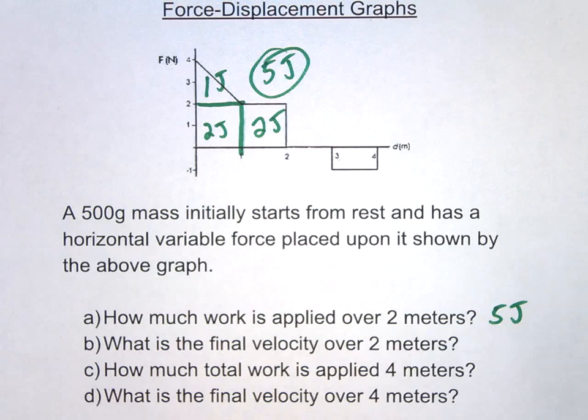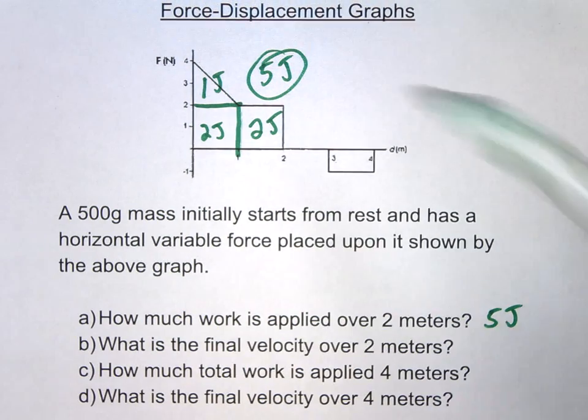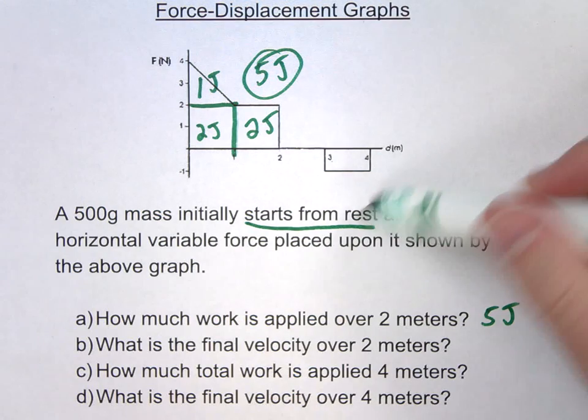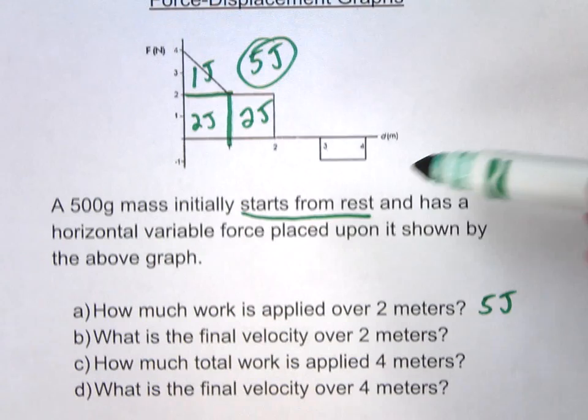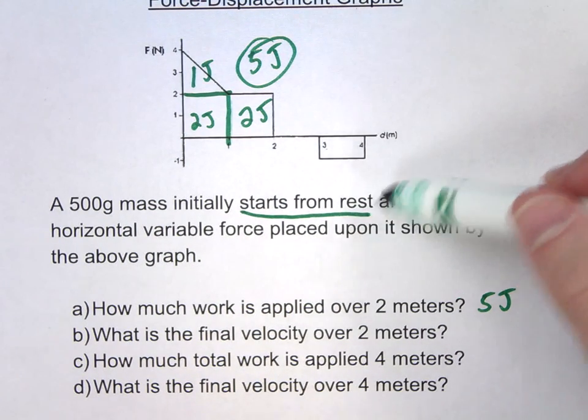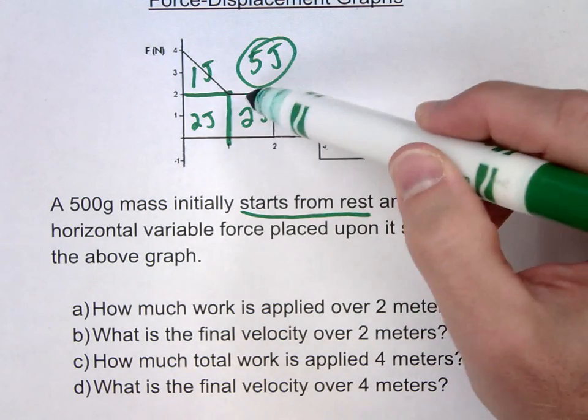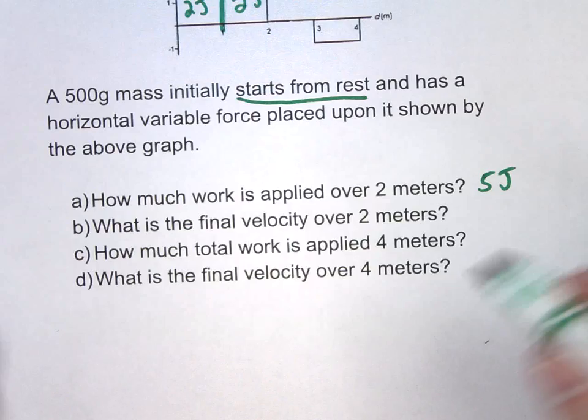All right, letter B, what's the final velocity over 2 meters? So this says we initially start from rest, which means our initial kinetic energy is going to be 0 here. So we have a situation where we're starting with 0 joules of energy. We're now going to have 5 joules of work applied. And that's going to then turn into a kinetic energy.